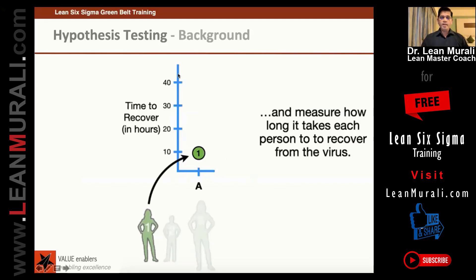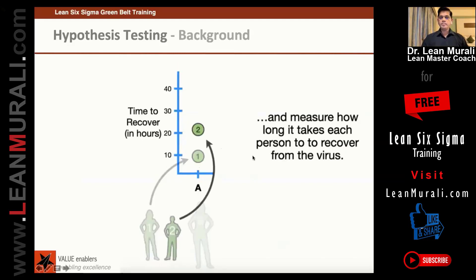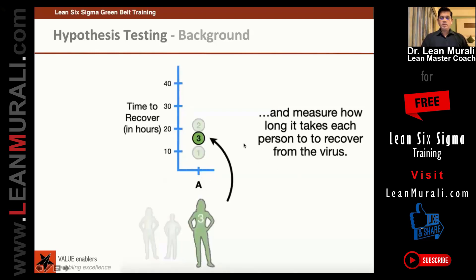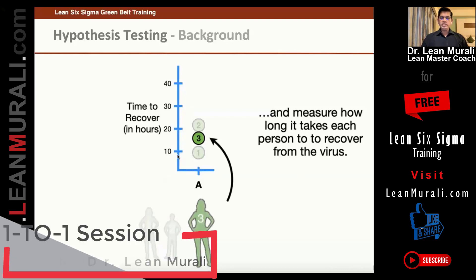Person 1 is on the x-axis with drug A, and on the y-axis you see the time to recover. Then we take person 2, the second person, and measure how long it takes for them to recover from the virus. Then we administer it to the third person and see the time it takes to recover. You can see the timelines here approximately — the time it takes to recover.